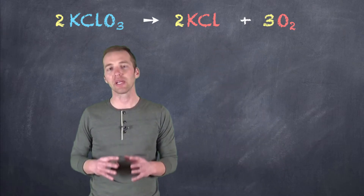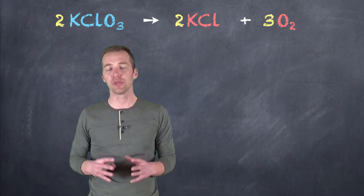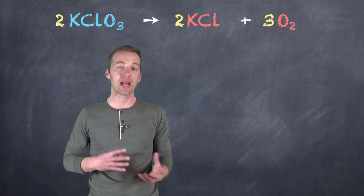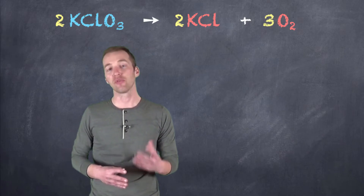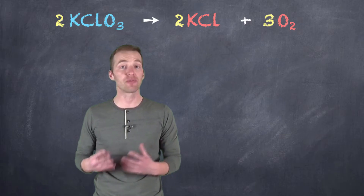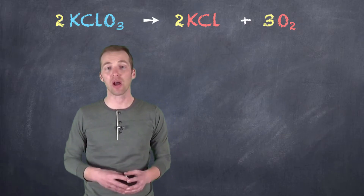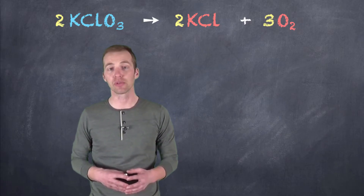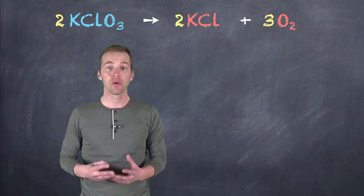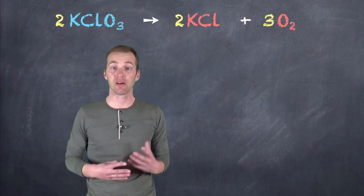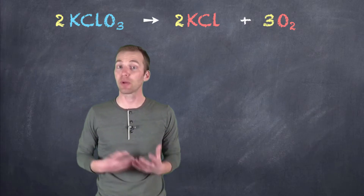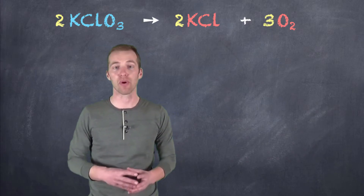What stoichiometry allows us to do is start comparing quantities of reactants and products together, so that if we have a certain amount of reactant, we can figure out how much product we can produce. Or, if we know how much product was produced, we can then figure out how much reactant must have been used up in order to produce that product.